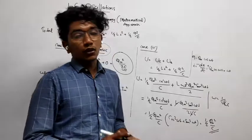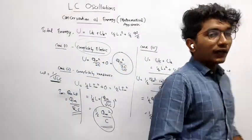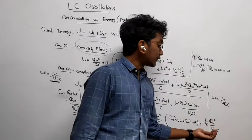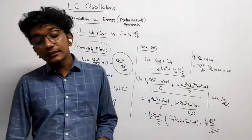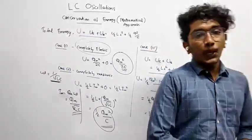How much is cosine squared omega t plus sine squared omega t? One. So the equation will be half into Qm squared divided by C. Half into Qm squared divided by C.